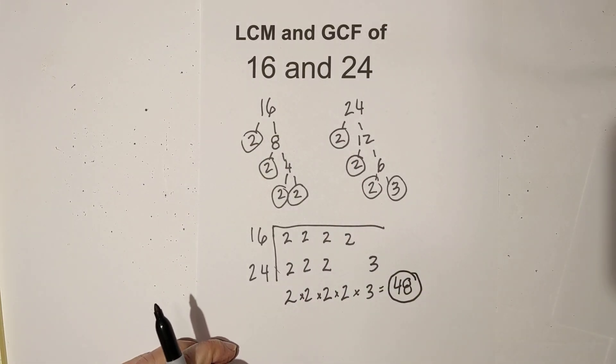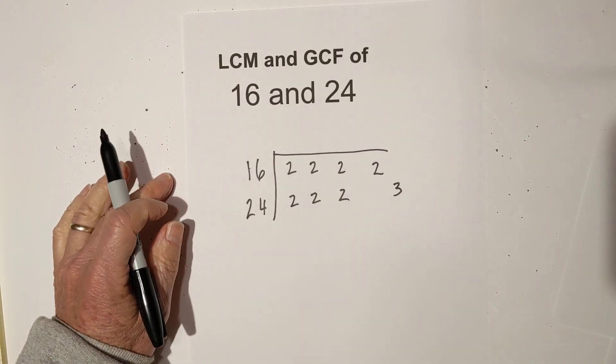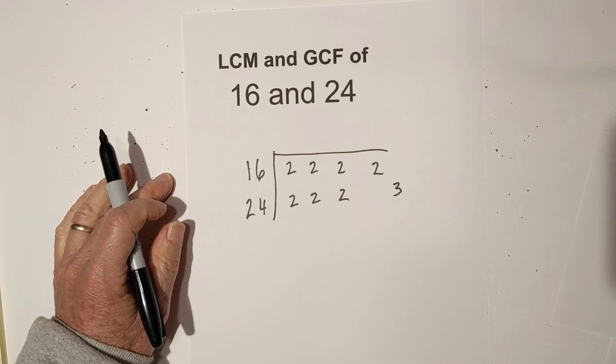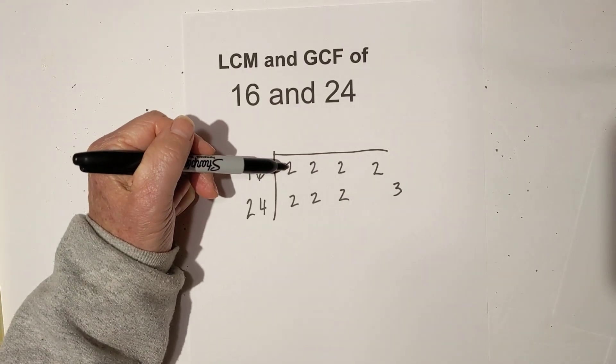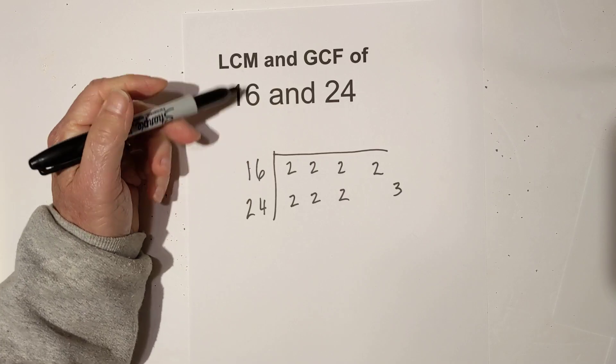Now I'll show you how to get the GCF, or the greatest common factor. Okay, now I use the same chart, and here's what I do differently. This time, I only use numbers if you have them in pairs, since we're finding the LCM and the GCF of two numbers.